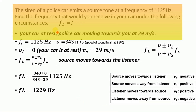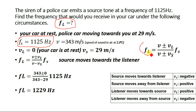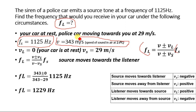The numerical: the siren of a police car emits a sound at a frequency of 1125 Hertz, so FS equals 1125 Hertz. We will determine FL, the frequency we will receive. For the first condition: your car is at rest and the police car is moving towards you at 29 meters per second. V is the speed of sound in air at 20 degrees Celsius, and VL equals zero because your car is at rest.